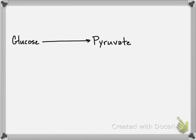So if you're looking at glycolysis, you've got glucose to pyruvate, and you're converting NAD+ to NADH as it gets reduced.